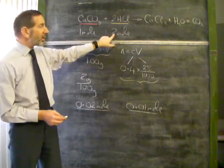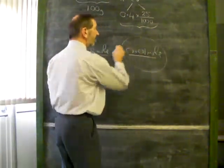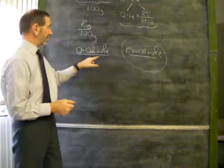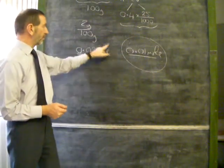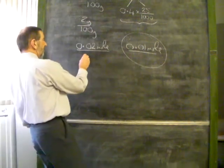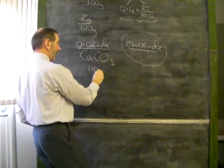If this is how much acid we have, we only need half that amount of calcium carbonate, and that is obviously excess. That's obviously more than half that number. Therefore, the calcium carbonate is in excess.